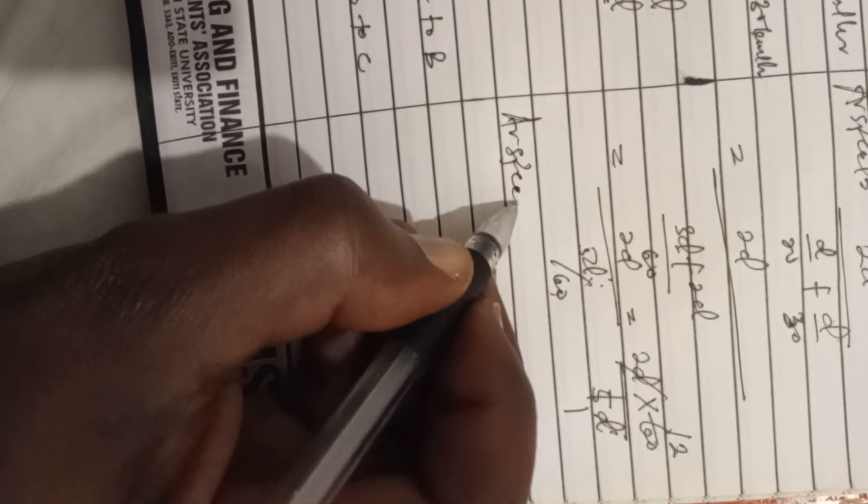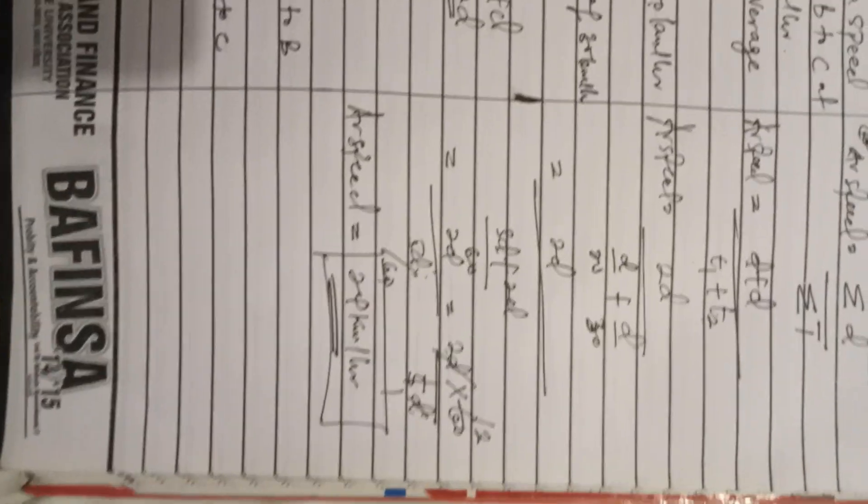So you have 2d times 60 over 5d. The d cancels, leaving 2 times 60 over 5, which is 120 over 5. The average speed for the journey is 24 km/h. So the answer is 24 kilometers per hour.